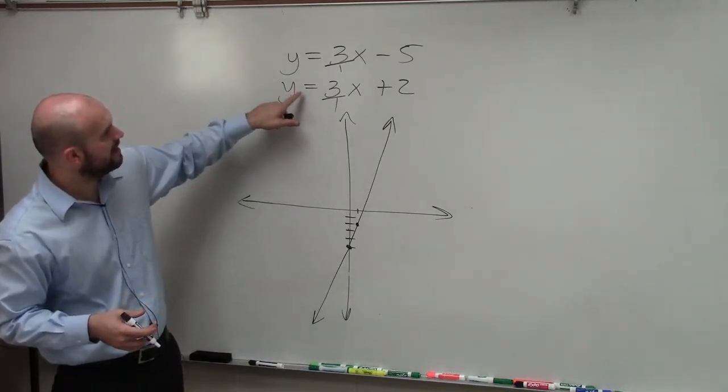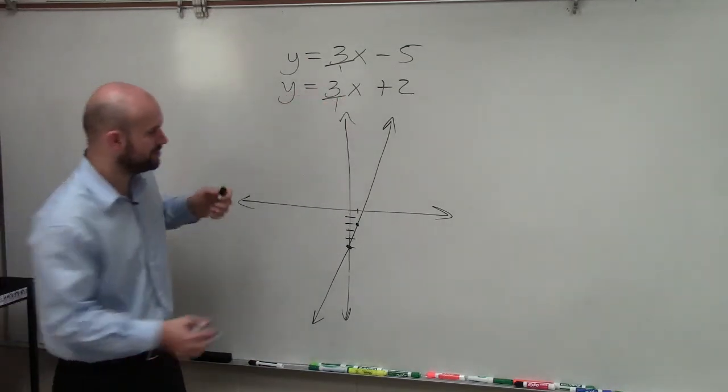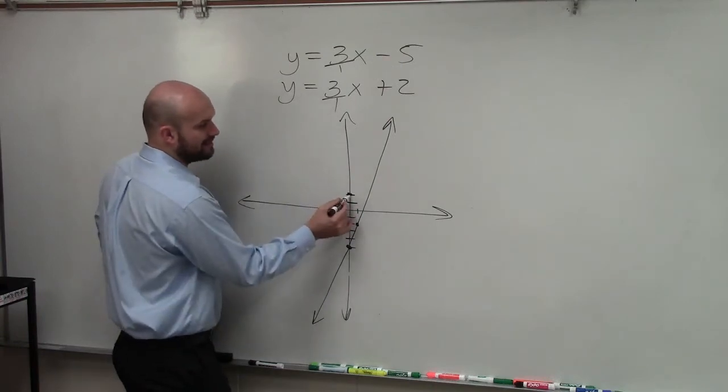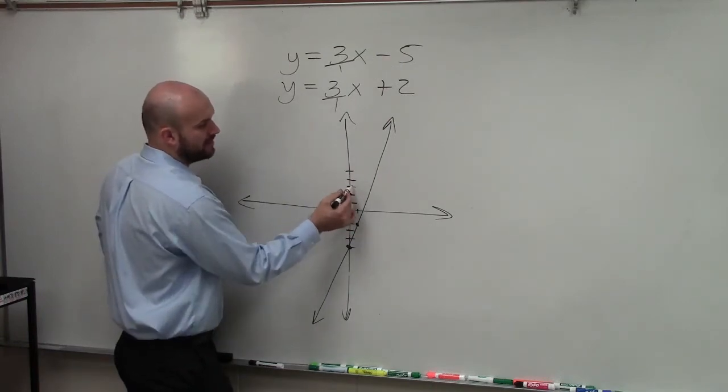The next one. Here, I have y equals 3x plus 2. So I go up to 2. And again, the slope is the same. So I go up 3: 1, 2, 3, over 1.